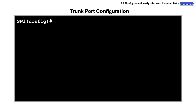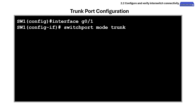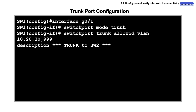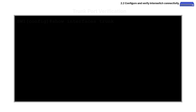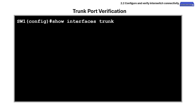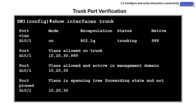Next is configuring trunk ports. First, enter the interface configuration mode. Then use the appropriate command to force the port to trunk mode. It is optional but best practice to label the interface. Here are commands to verify trunking ports. The show interfaces trunk command displays all trunk ports on the switch and their trunking details.